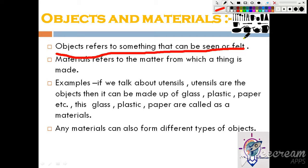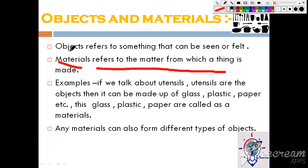The next definition: material refers to the substance from which a thing is made. What is material? We make objects — the matter required to make that thing is called material. For example, if you talk about utensils — utensils are objects that can be made up of glass, plastic or paper. Here, utensils come under the category of object, and glass, plastic, paper come under the category of material.